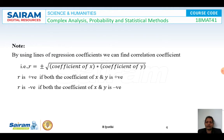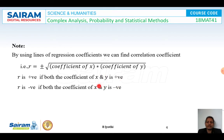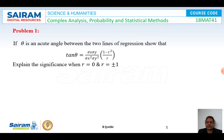Note: Using the regression coefficients, we can find the correlation coefficient. It is given by r equals plus or minus the square root of (coefficient of x) times (coefficient of y). If r is positive, both regression coefficients are positive. If r is negative, both regression coefficients are negative.